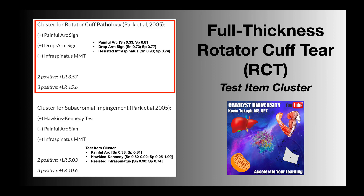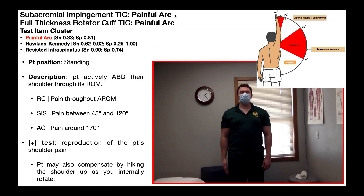Now that we understand the test item cluster, let's look at the individual tests. The painful arc test is a component of two test item clusters: one for subacromial impingement syndrome, and the other for a full thickness rotator cuff tear. Before we go any further, let's look at how the test is done.